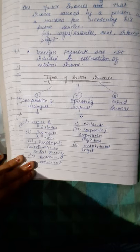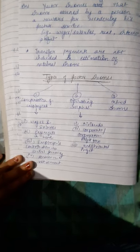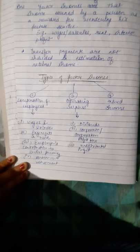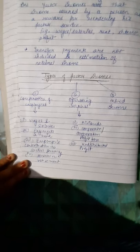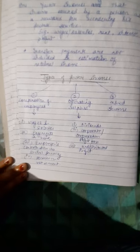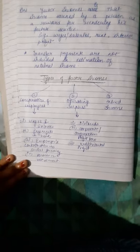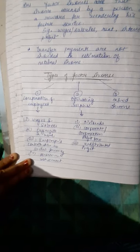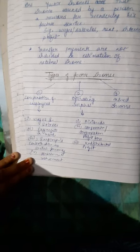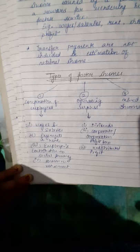Employer's contribution refers to payments such as provident fund contributions made by employers on behalf of employees. Pension on retirement specifically does not refer to old age pension — it only refers to pension payments made as part of the service contract between the employer and the employee.